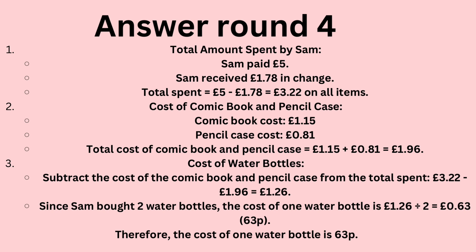Total amount spent by Sam: Sam paid £5 and received £1.78 in change. Total spent equals £5 minus £1.78, which equals £3.22 on all items. Cost of comic book and pencil case: comic book cost £1.15, pencil case cost 81p. Total cost of comic book and pencil case equals £1.15 plus £0.81 equals £1.96. To find cost of water bottles, subtract £1.96 from £3.22, which equals £1.26.